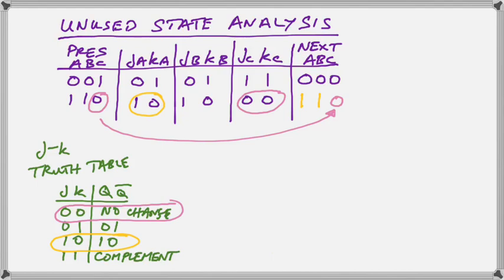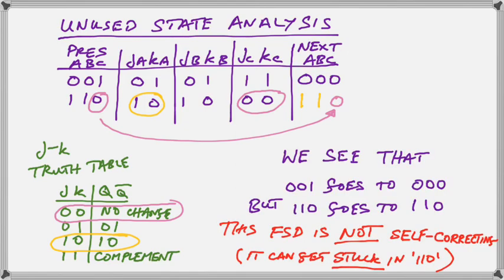Now we've finished working out our unused state table, and we can see that 0, 0, 1 is going to go to state 0, 0, 0, but we see that 6, 1, 1, 0, is going to stick in 6. It's not going to be able to change. In other words, the present state is 6, and the next state is 6. It means we're stuck. It means our finite state device is not self-correcting because we're stuck in 6. Self-correcting means that the unused states will return to the cycle eventually. If we get stuck in 6, there's no way that we can get back to our cycle.